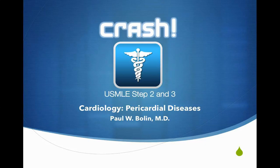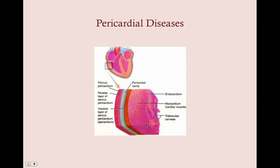Here we're going to talk about pericardial diseases. We've done a section on myocardial diseases or cardiomyopathy. Now we're moving on to the pericardium, which has three distinct layers: the visceral layer, intimately associated with the myocardium; the pericardial cavity, which is a potential space that can be filled with fluid; and the outer fibrous parietal layer. We have fibrous pericardium and visceral pericardium, divided by a pericardial sac or cavity.